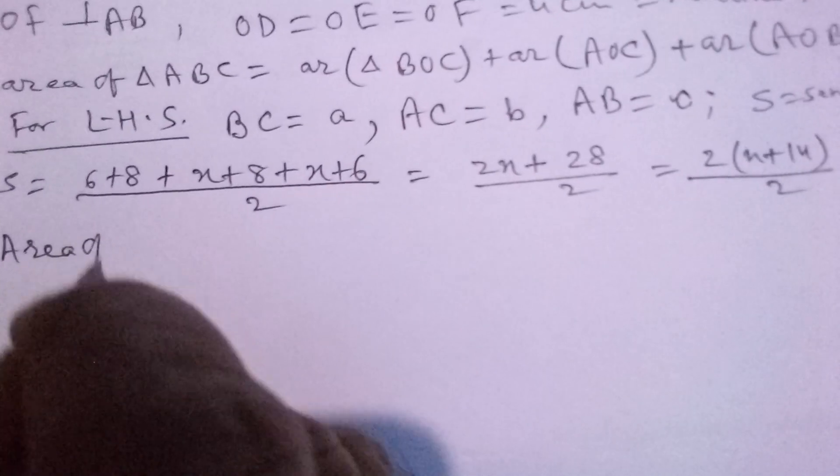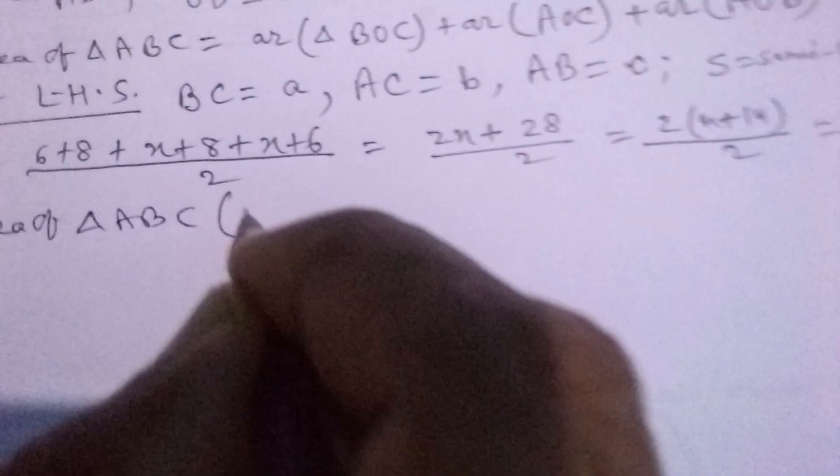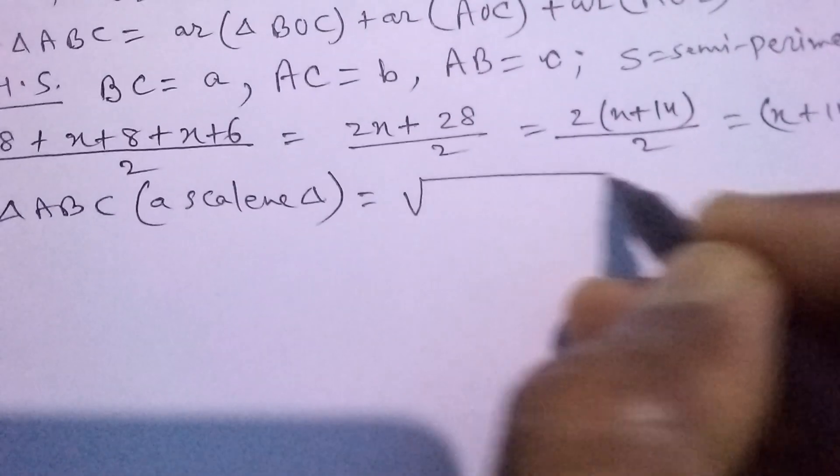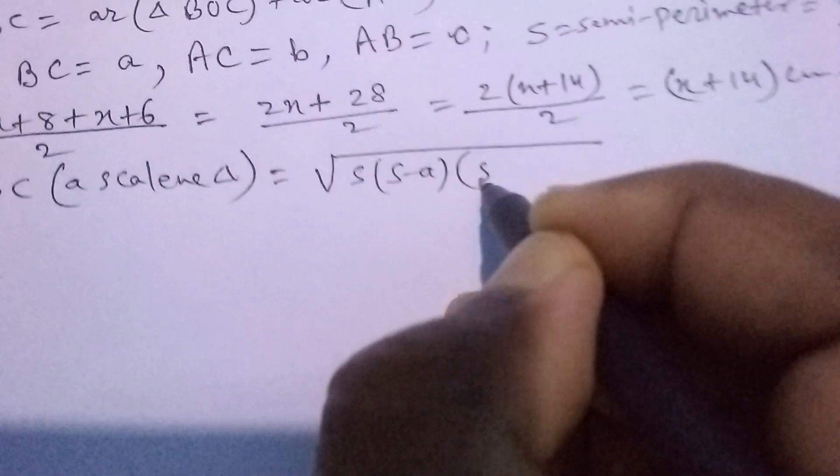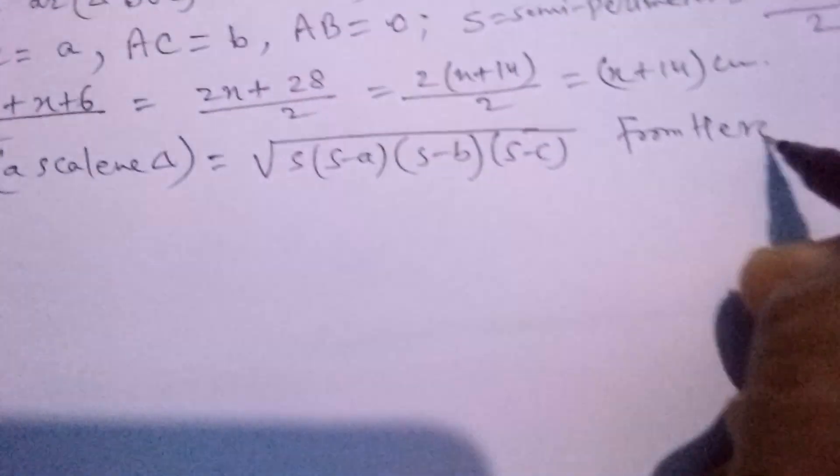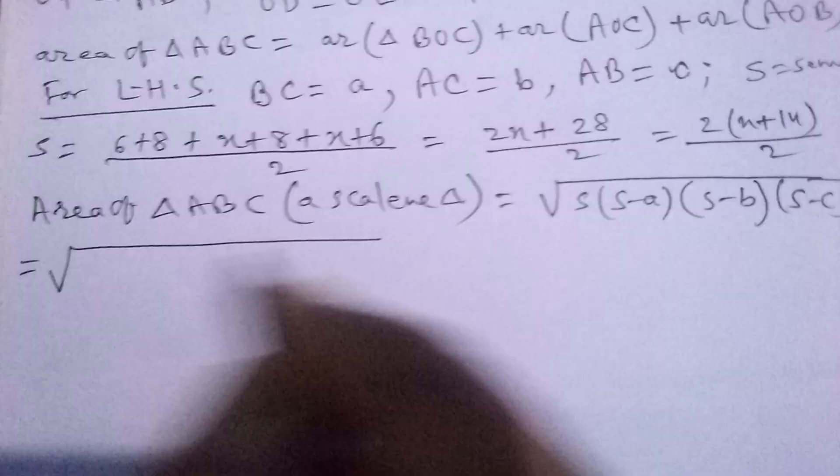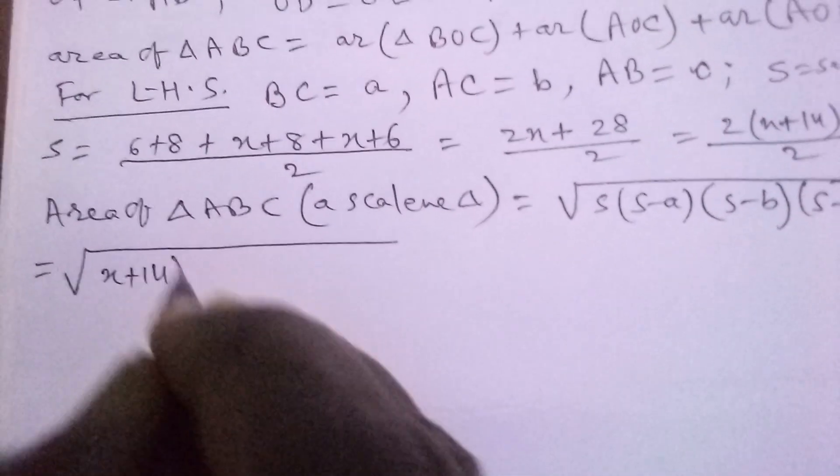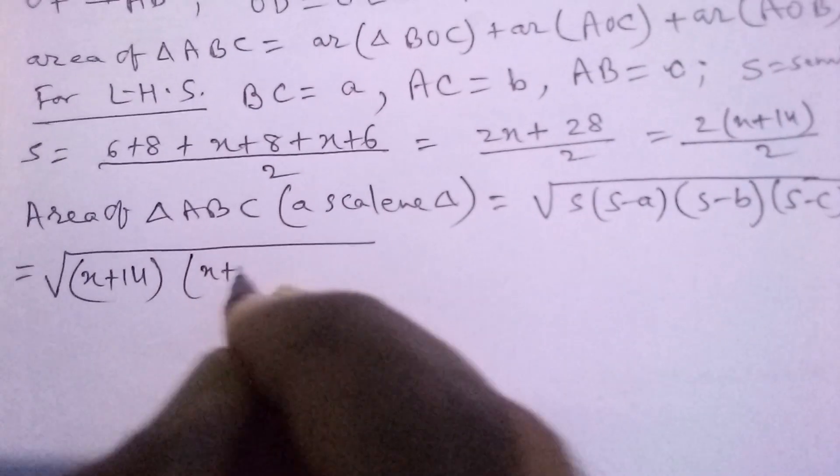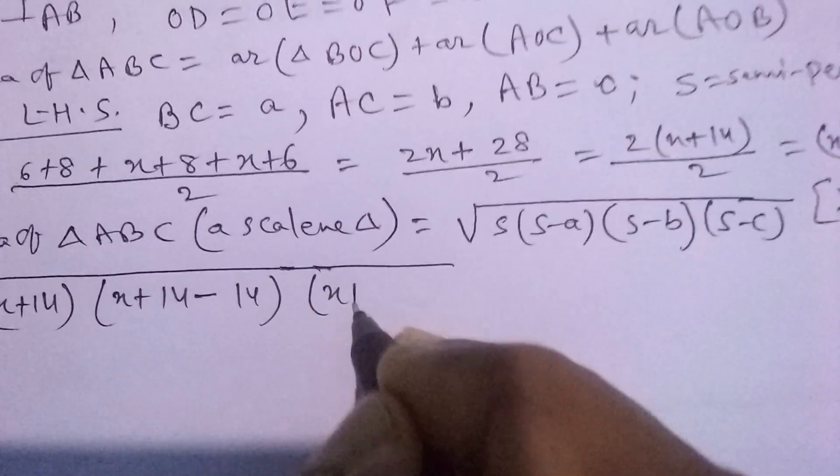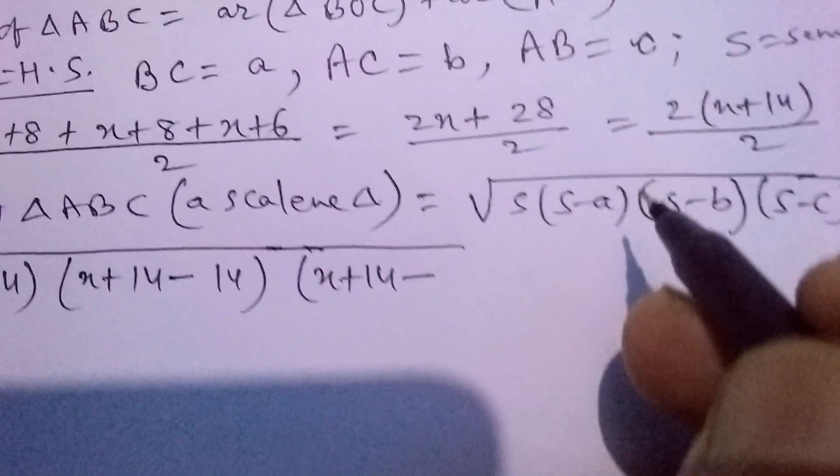Now area of triangle ABC, which is a scalene triangle, equals square root of S(S-A)(S-B)(S-C) from Heron's formula. We put the value: square root of (X+14)(X+14-14)(X+14-(X+8))(X+14-(X+6)).